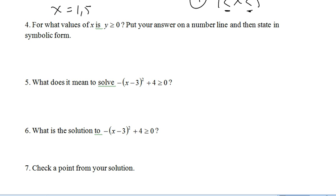Number 5 asked us what does it mean to solve that. Same as usual, we're finding all values of x that are going to make that thing true. Well, on the graph, basically this is the same as saying when is y greater than or equal to 0. Because on the graph, the values for y and the values for this are the same. So, the solution to this guy is going to be 1 is less than or equal to x is less than or equal to 5.